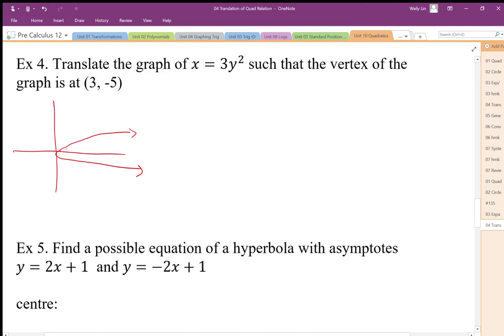And we want to move this graph so the vertex from (0,0) translates to 3 to the right, 5 down. So it's going to look like this.